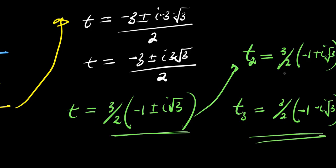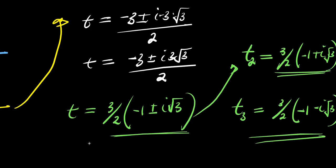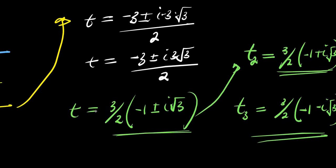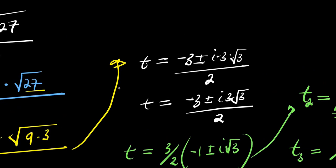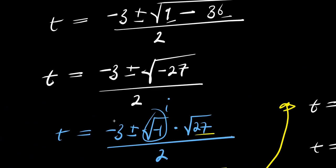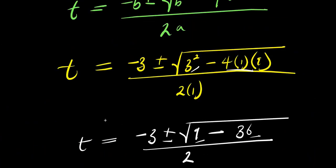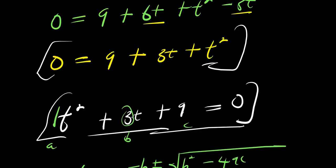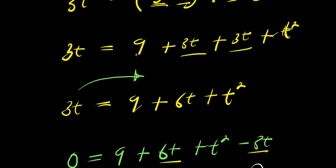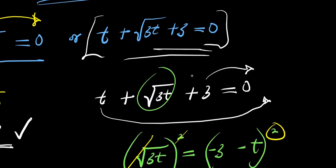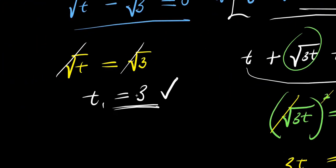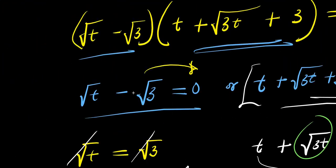So we have two complex solutions: t₂ equals three over two times negative one plus i root three, and t₃ equals three over two times negative one minus i root three. And one real solution from earlier.